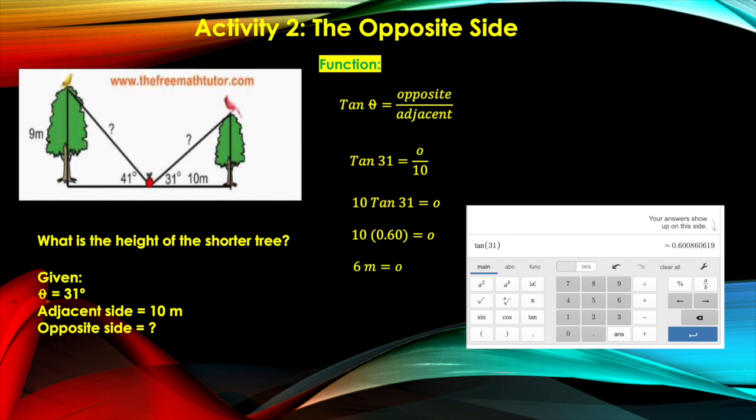That will give us 6 meters. So the opposite side of the right triangle here, which is represented by the height of the shorter tree, is equal to 6 meters. That's easy, right? There you have it, guys. You can now start working on Activity 2 of Module 6.